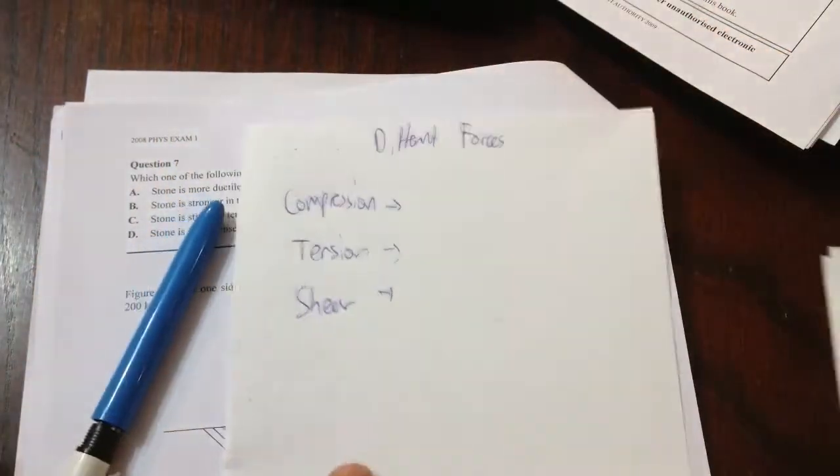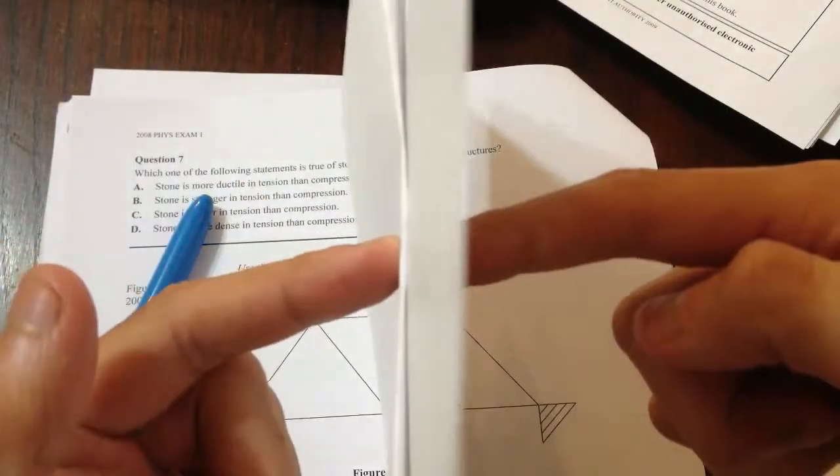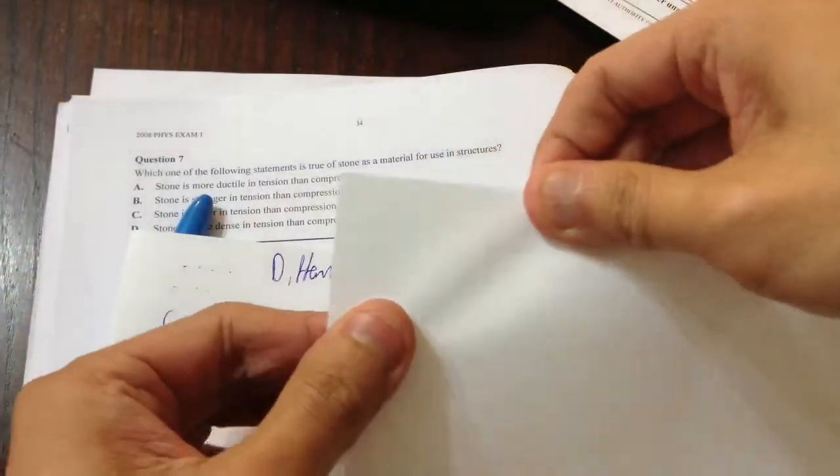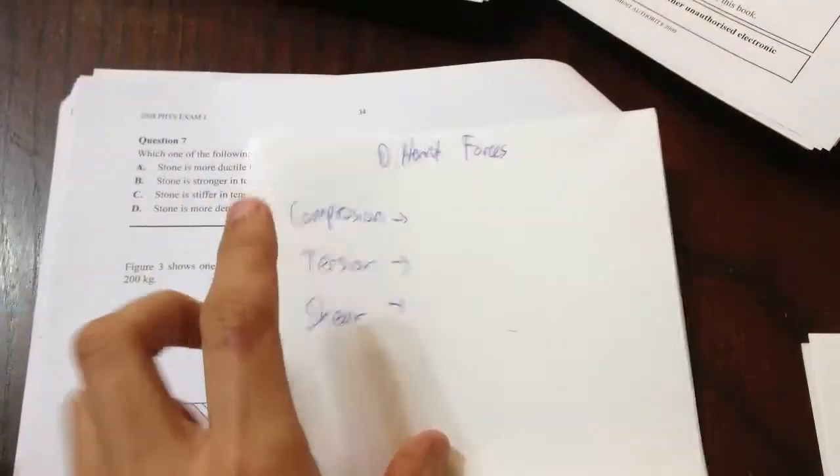Maybe if I show you with a piece of paper that could work. So compression would be pushing them into each other. Tension would be pulling them away from each other or pulling this piece of paper apart. And shear would be like one piece of paper being rubbed like that. So that's what each of them are.